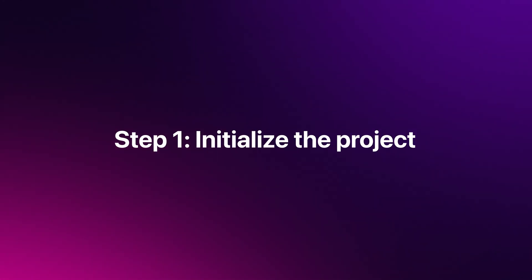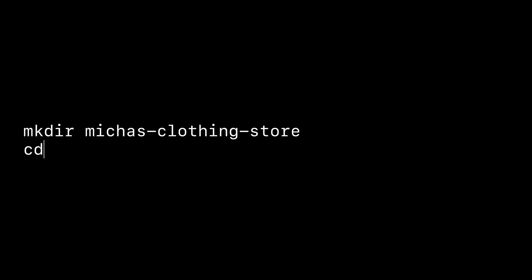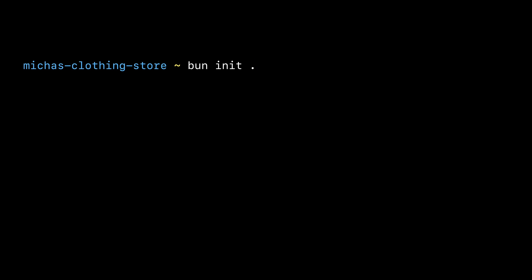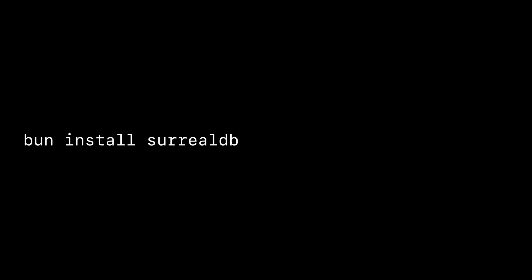In this video, we will use Bun, as that provides TypeScript support out of the box. However, you can use any package manager and runtime you prefer. To use SurrealDB with the JavaScript SDK, we first need to install the SDK and set up a SurrealDB instance. Let's open a terminal and create a directory for our project — I'll call it Mischa's Clothing Store. Let's initialize the folder with Bun and simply accept the defaults. Lastly, let's install the SurrealDB JavaScript SDK in our project.